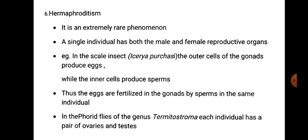In the phorid flies of the genus Termitoxenia, each individual has a pair of ovaries and testes. In hermaphroditic insects, both male and female reproductive organs are found in one individual, and the sperms of that same individual fertilize its own ova. The outer cells of the gonads produce eggs and the inner cells produce sperms.